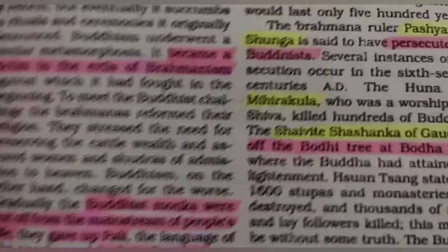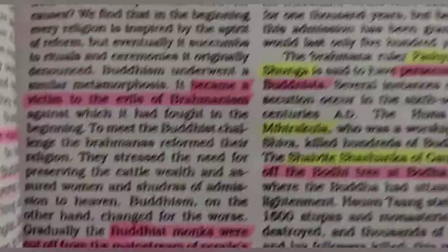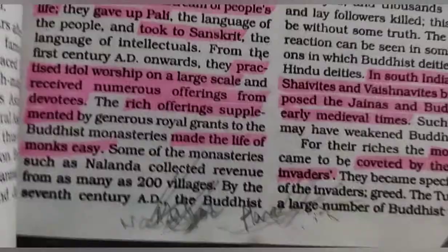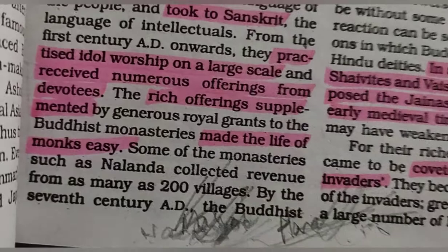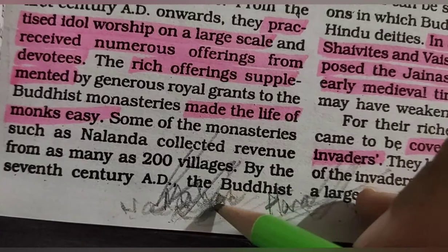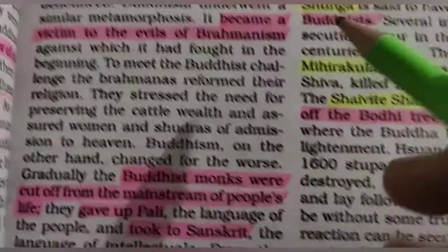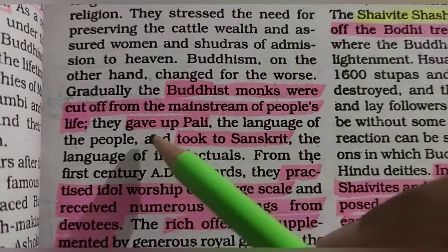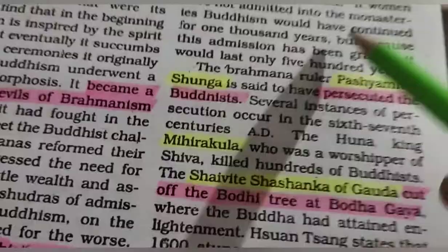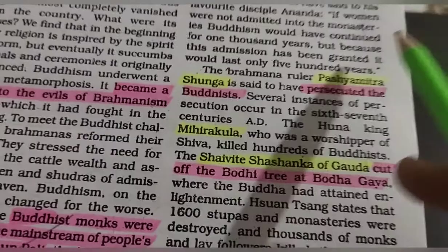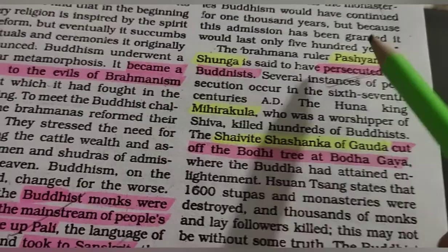Buddhism declined because it became a victim to the evils of Brahmanism. Things started coming in like Mahayana — idol worship crept in. Buddhist monks were again cut off from the mainstream; they gave up Pali and took to Sanskrit, practiced idol worship, and rich offerings supplemented and made the lives of monks easy. So Buddhism remained very limited in India, though it survived in Tibet and parts of China.